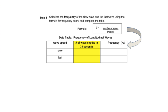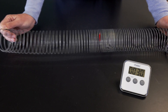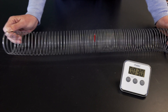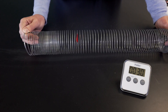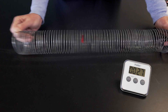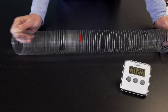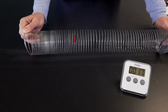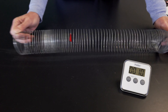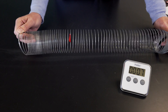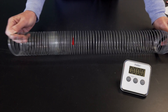Record that number in the top box. Now I make waves at a fast constant rate and count for 30 seconds. Record that number in the lower box. That was 70 waves.